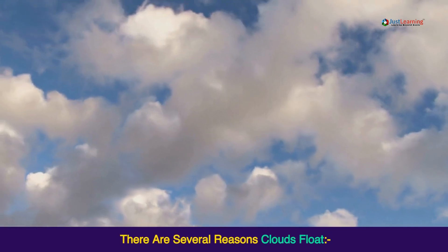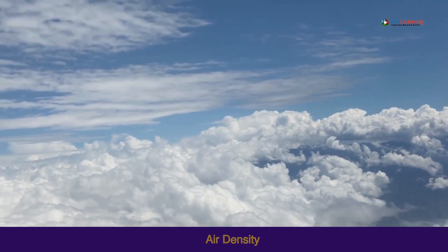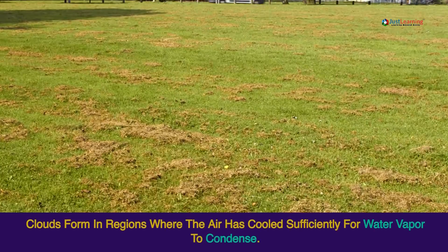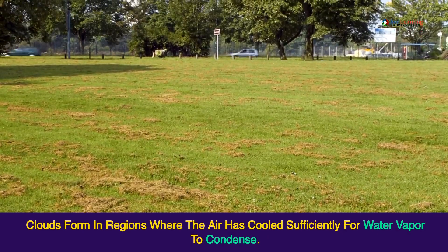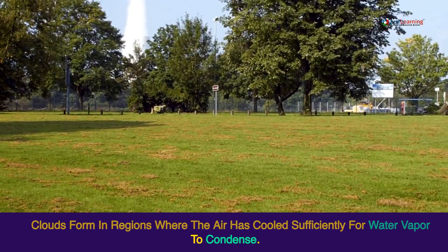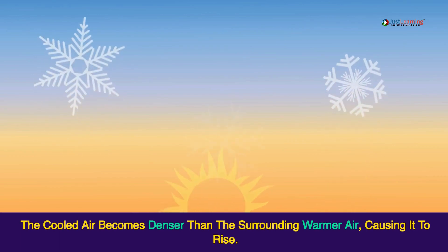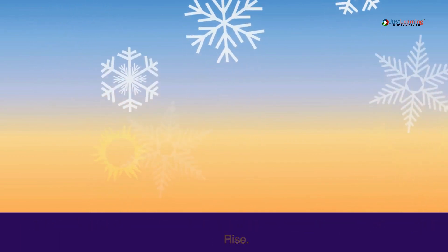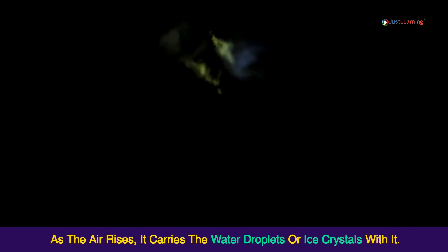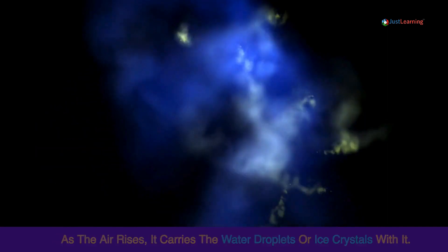There are several reasons clouds float. Air density: clouds form in regions where the air has cooled sufficiently for water vapor to condense. The cooled air becomes denser than the surrounding warmer air, causing it to rise. As the air rises, it carries the water droplets or ice crystals with it.